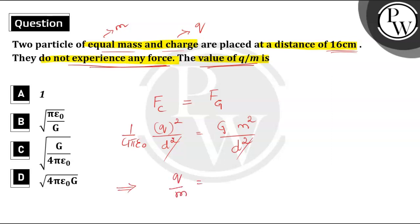We want the ratio of Q by M. So Q by M will be equal to the square root of 4 pi epsilon naught G. So option D is the correct answer.